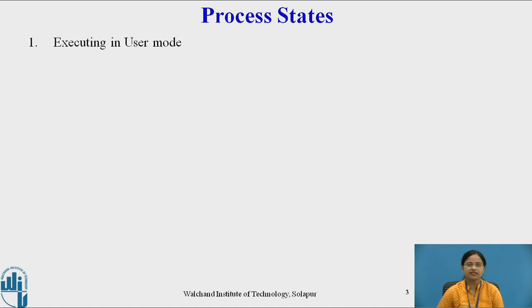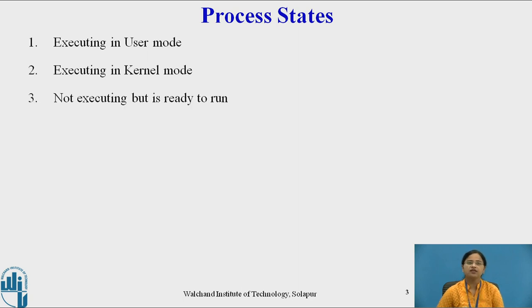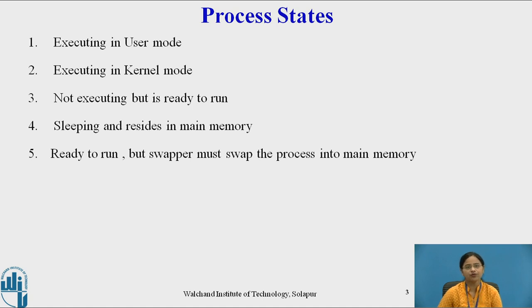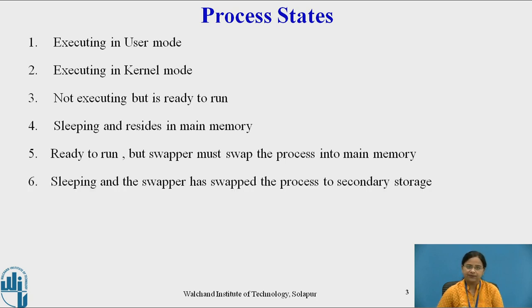First, the process is executing in user mode. Second, the process is executing in kernel mode. Third, the process is not executing but is ready to run whenever the kernel schedules it. The process is sleeping and resides in main memory. The process is ready to run but the swapper (process 0) must swap the process into main memory before the kernel schedules it. The process is sleeping and the swapper has swapped the process to secondary storage to make room for newly arriving processes.